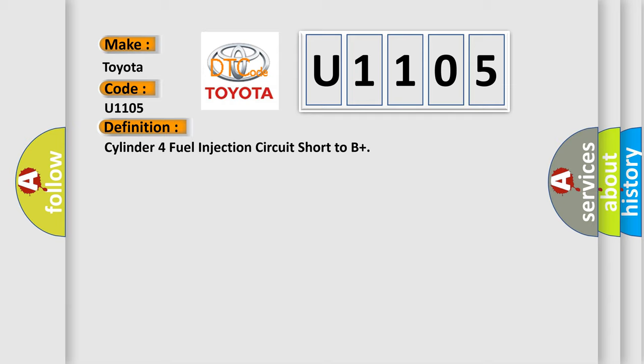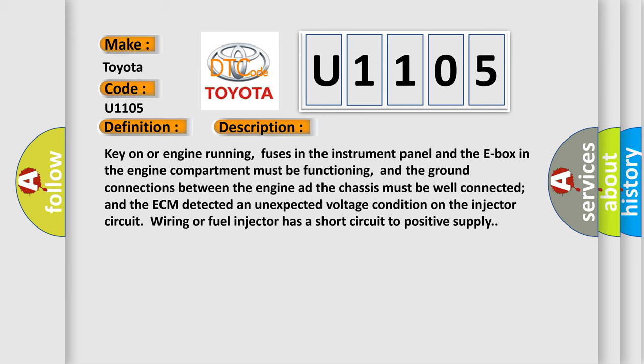And now this is a short description of this DTC code. Key on or engine running, fuses in the instrument panel and the E-box in the engine compartment must be functioning, and the ground connections between the engine and the chassis must be well connected, and the ECM detected an unexpected voltage condition on the injector circuit wiring or fuel injector has a short circuit to positive supply.